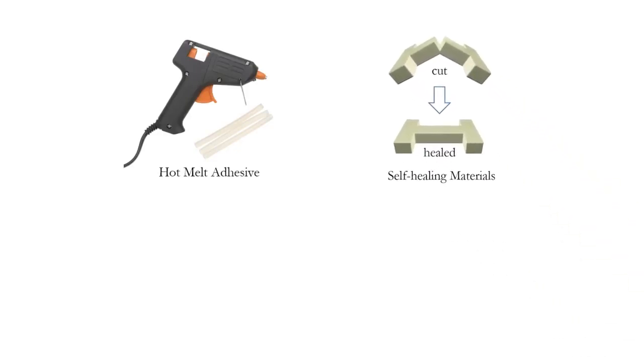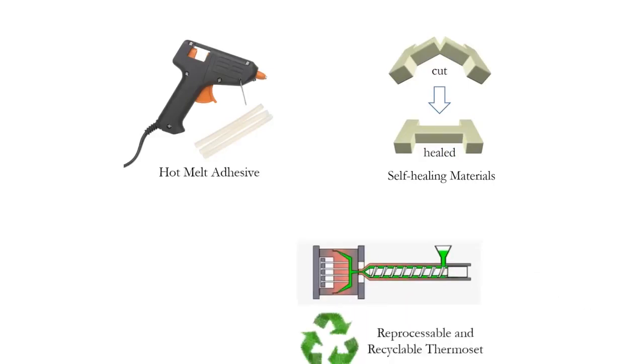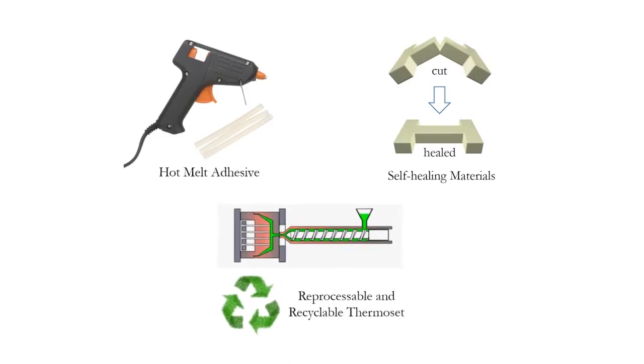Hindered polyurea materials are also self-healable. When damage occurs to the materials, they can spontaneously reattach and recover their original mechanical strength. Since hindered polyureas can transform back into small molecules, the material is easy to be recycled and reformed.